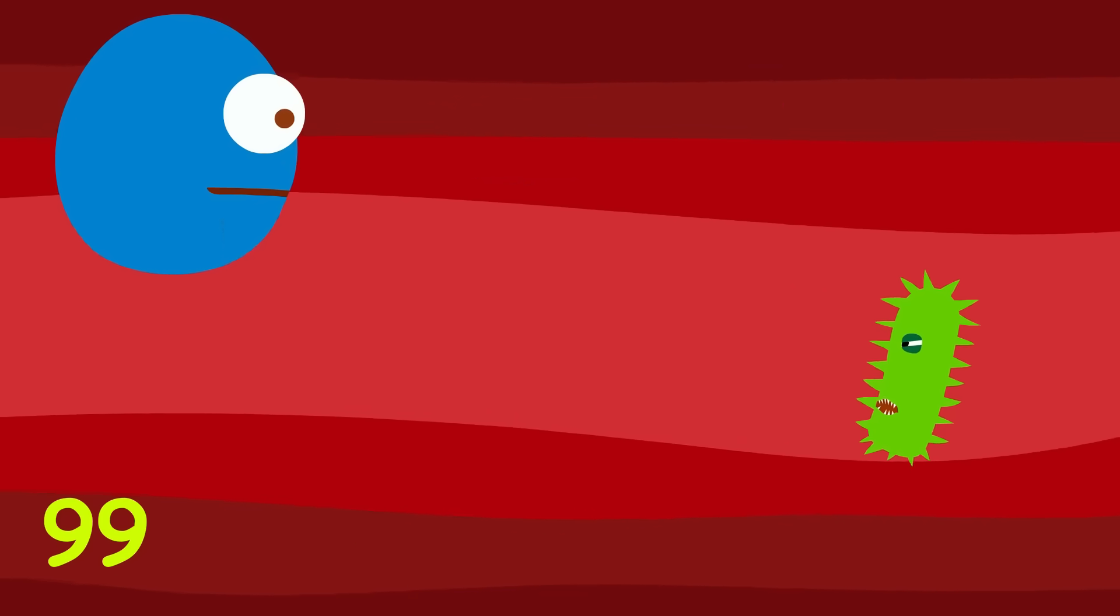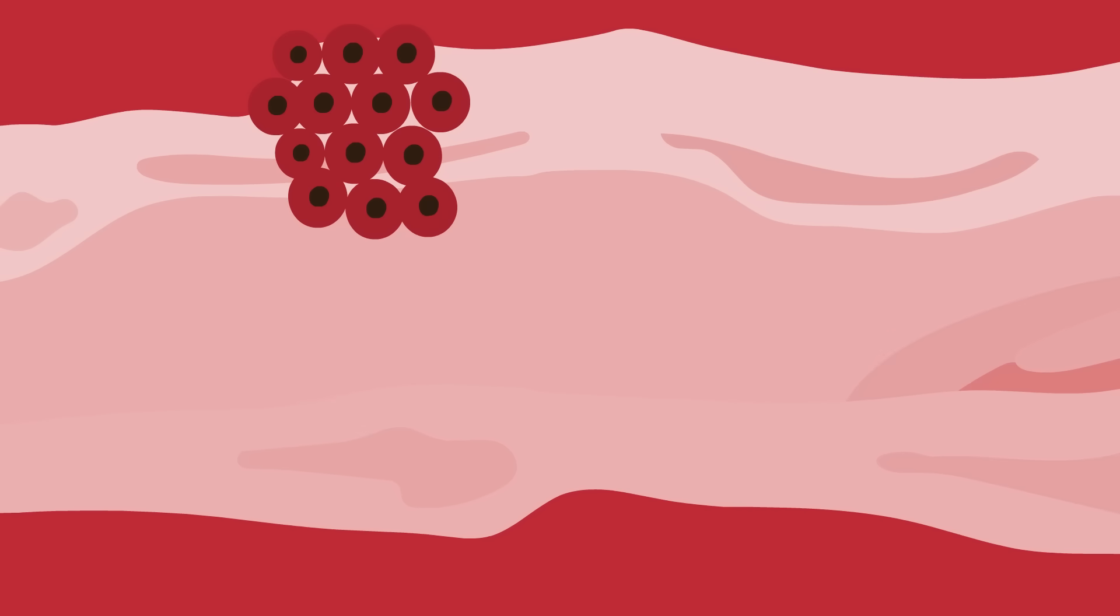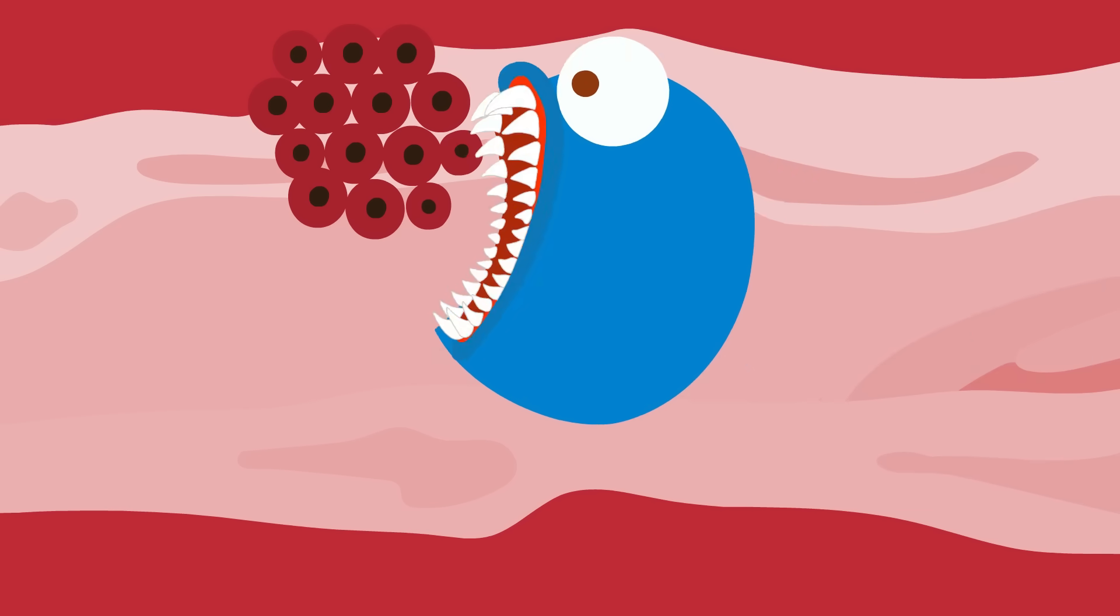These cells can consume about 100 pathogens before they die, but they can also detect our own cells that have gone rogue, such as cancer cells, and kill them too.